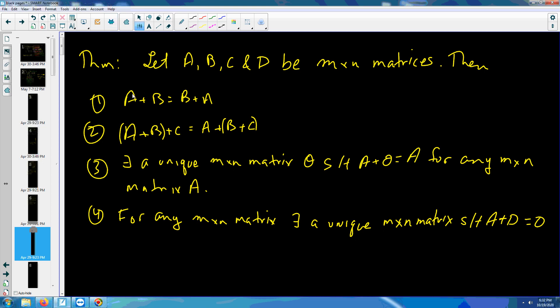I'm going to prove this theorem for addition for n by n matrices. If you're given four n by n matrices, you can show that they commute, that they have the associative law, that there is an identity element.